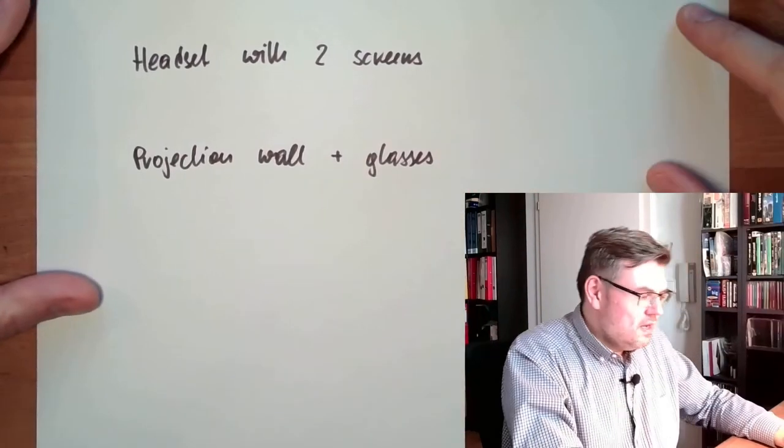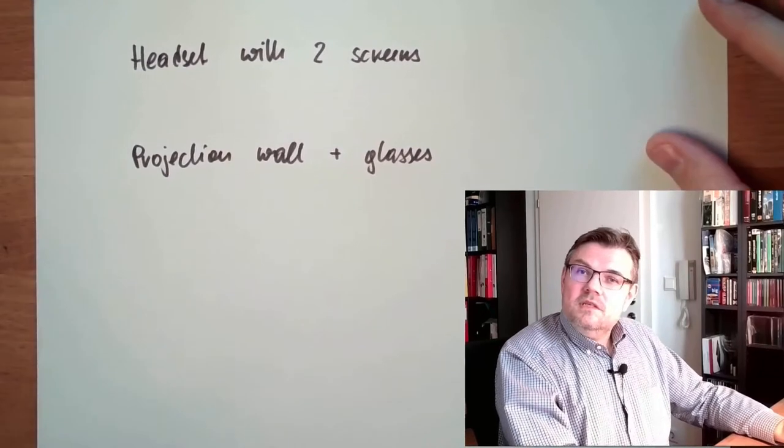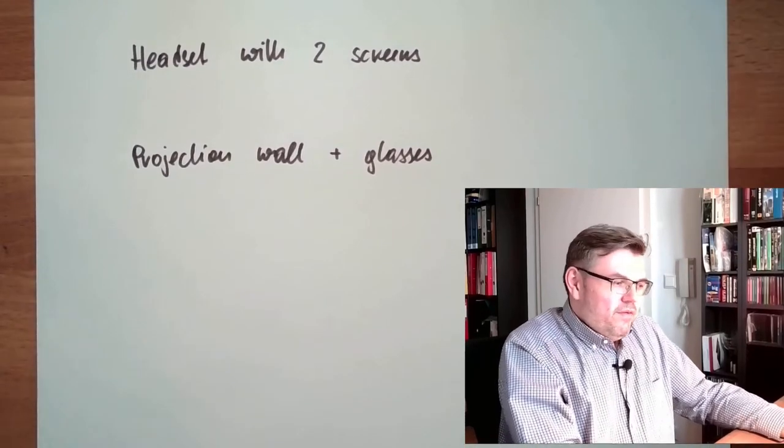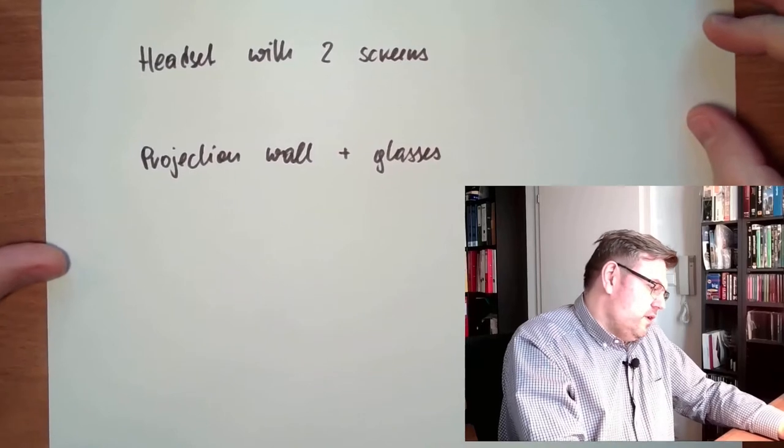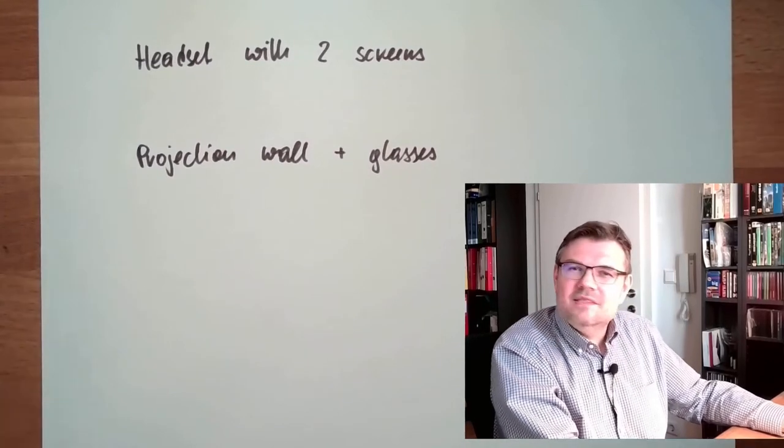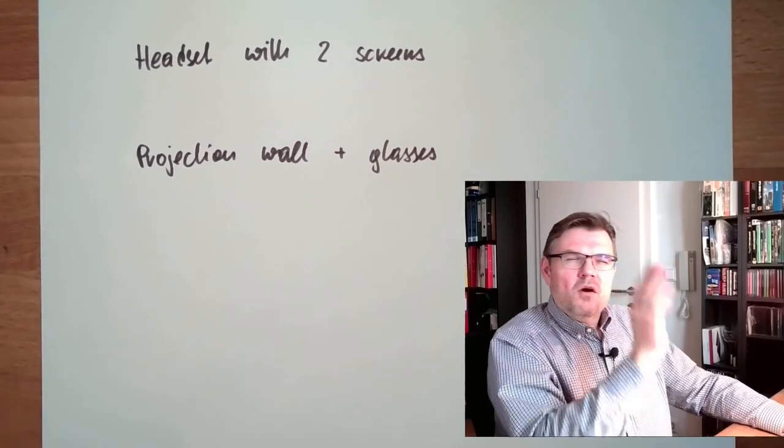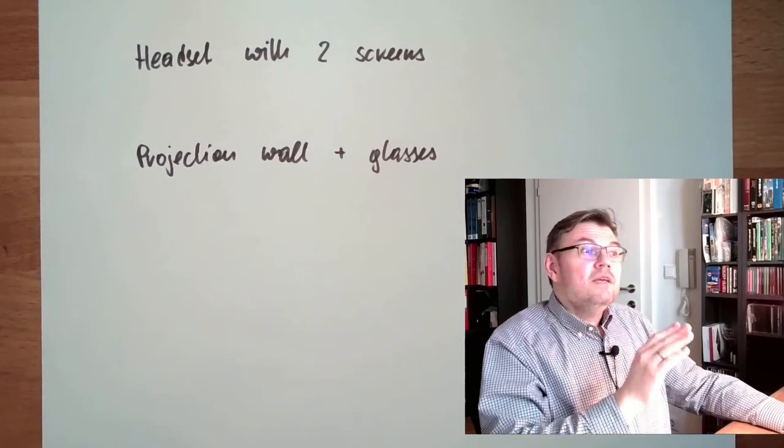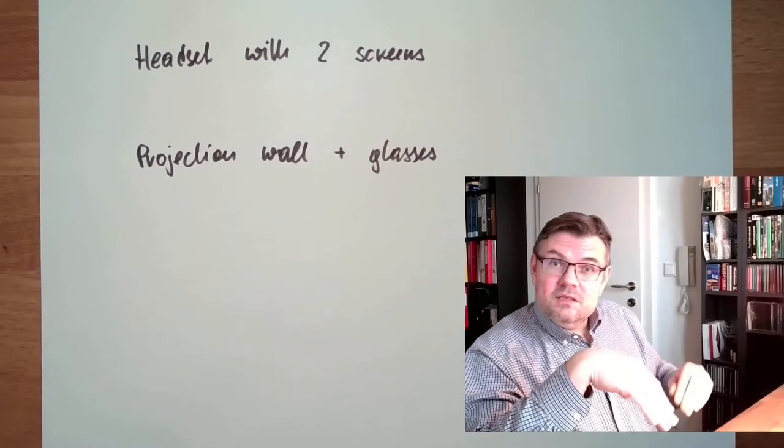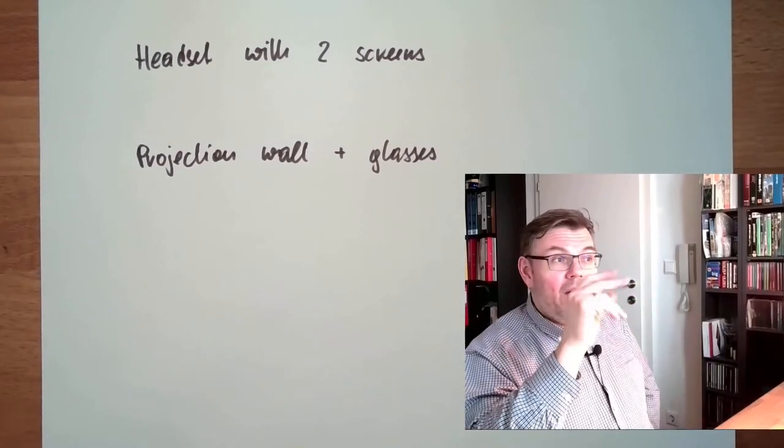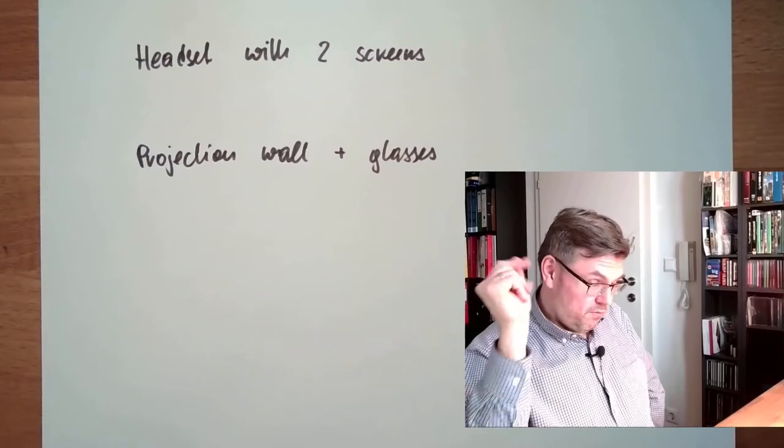Another possibility is what is often used in cinemas: to have a passive technology, so that there are polarized light, that my left eye only sees the light which is produced from the left eye, and my right eye only sees the light which is produced from the right eye.